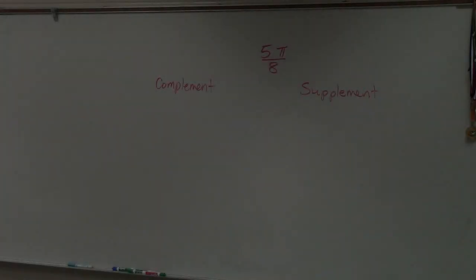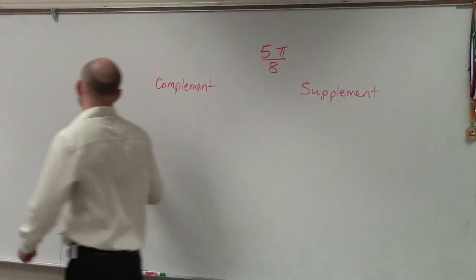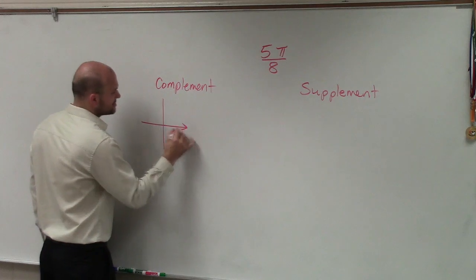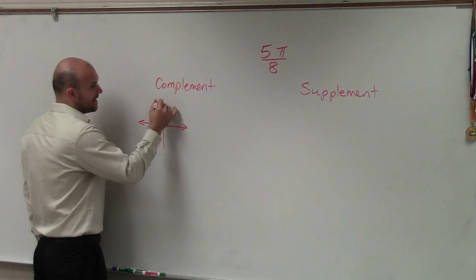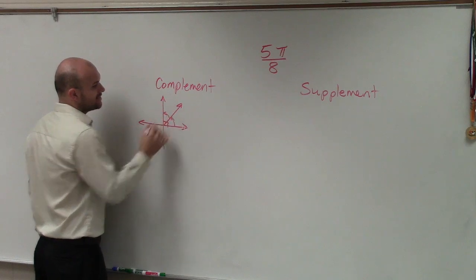We want to define the complement and the supplement of an angle. Remember, when we're talking about angles, the complement is going to be two angles that add up to give you 90 degrees.